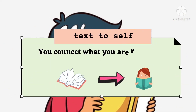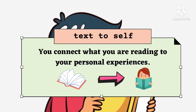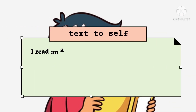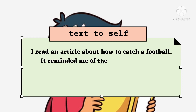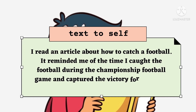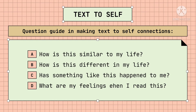Now, let's move on to text-to-self connection. You connect what you are reading to your personal experience — that is text-to-self connection. For example, this story reminds me of a vacation I had on a beach, just like the main character. Another example: I read an article about how to catch a football. It reminded me of the time I caught the football during the championship football game and captured the victory for my team. And here are the simple guide questions in making text-to-self connections: How is this similar to my life? How is this different in my life? Has something like this happened to me? What are my feelings when I read this?